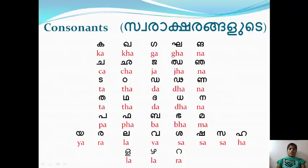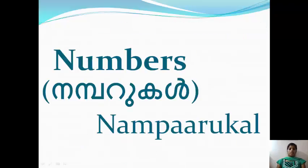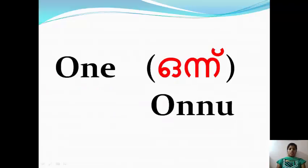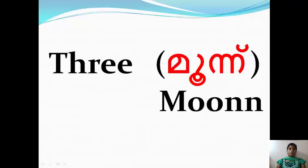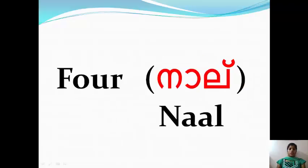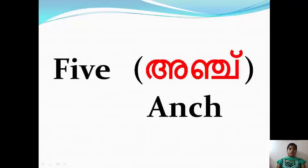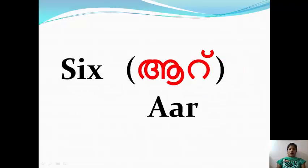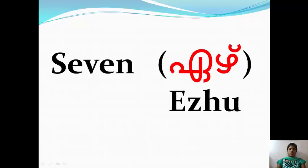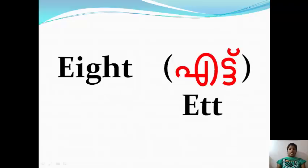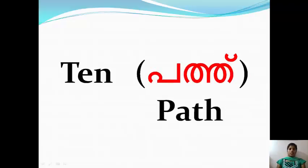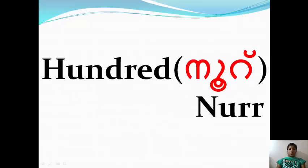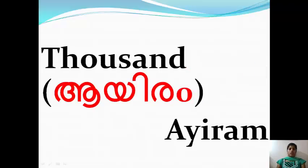Ra Akshara. Numbers is also known as Number Kal. 1 is also known as Onnu, 2 Rendu, 3 Muunu, 4 Naalu, 5 Anju, 6 Aaru, 7 Eelu, 8 Ettu, 9 Ompadu, 10 Pattu, 100 Nooru, 1000 Aayiram.